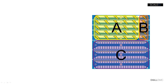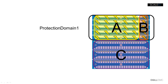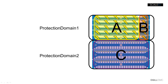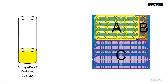Storage pools A and B reside in protection domain 1, which is made up of all-flash nodes. Storage pool C, which we will not modify in this video, resides in protection domain 2, which is made up of nodes that house spinning media. At the start of this demo, storage pool A will be 22% full and storage pool B will be 76% full.